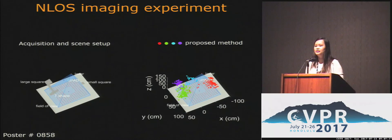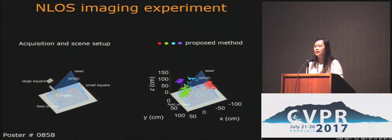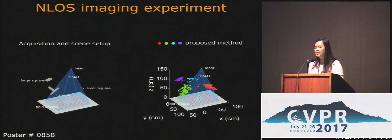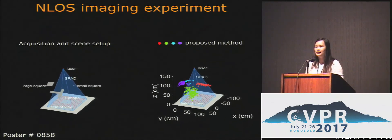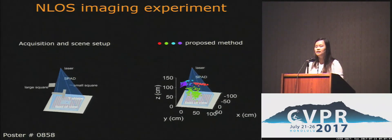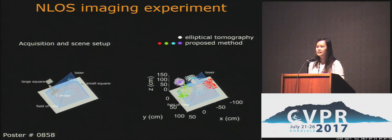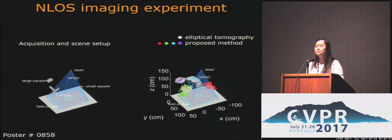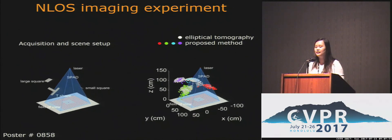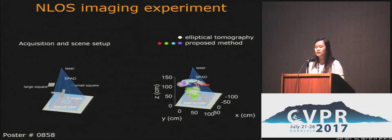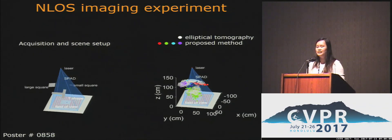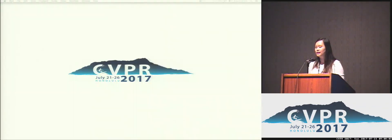Our last experiment uses data from Bubadar et al. to reconstruct the hidden scene. On the left-hand side you see the scene being imaged — notice it is not visible to the camera. On the right-hand side you see our recovered result, which is pretty good compared to the state-of-the-art result that uses all the photons and requires solving a hard inverse problem. Our method is simple and requires only solving for the first return photons. Our poster number is 20.